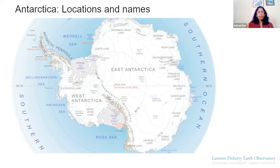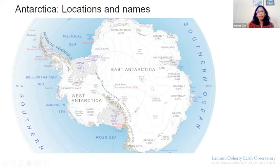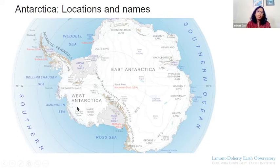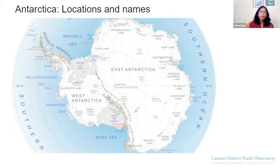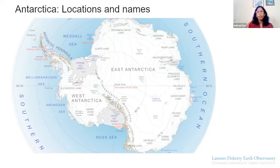So a huge continent. Here we'll learn some important locations and names. This is East Antarctica, and Antarctica is completely surrounded by ocean. This little part over here is West Antarctica. West Antarctica is almost always in the news because of two important glaciers — Pine Island and Thwaites Glacier — which are changing very rapidly. And then we have the beautiful Antarctic Peninsula. You must have heard about the Antarctic Peninsula because the ice shelves around here, particularly the Larsen ice shelf, keeps calving off large icebergs.